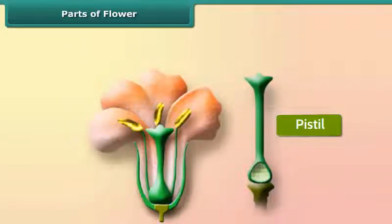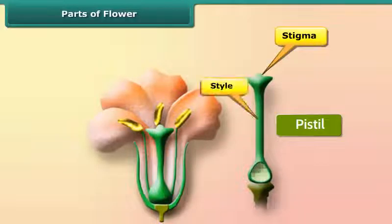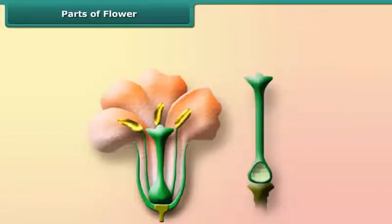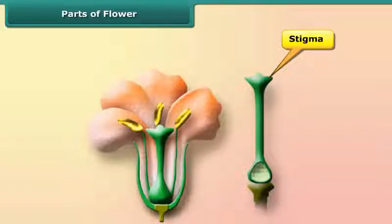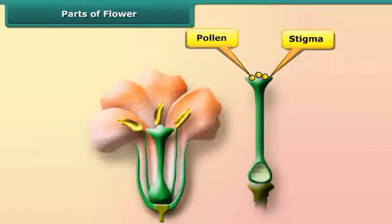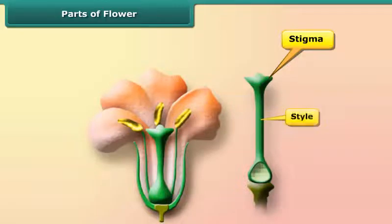The pistil has three parts: stigma, style, and ovary. The stigma is the sticky surface on the top of the pistil — it traps and holds the pollen. The style is the tube-like structure that holds up the stigma, and the ovary contains the ovules.